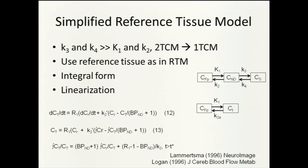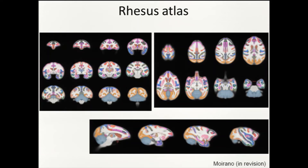The final piece of methodology: we obtain images and typically want to compare animals between subjects and within animals. One way is to take the images and put them into a template space. When all images are aligned to this template space, we can interrogate it by regions of interest and ask, for instance, what the tracer is doing in a region of cortex or in a part of striatum.